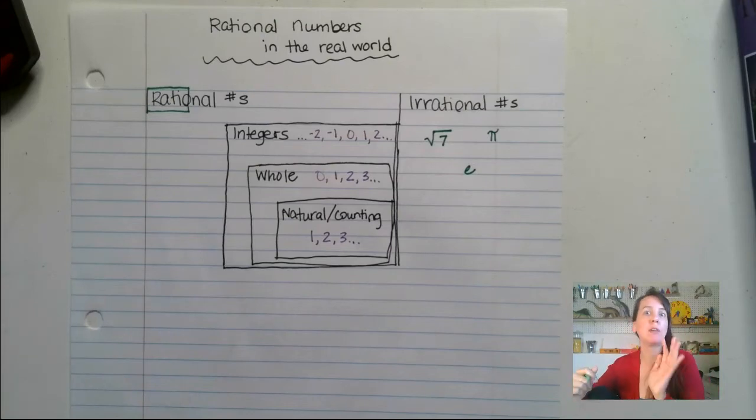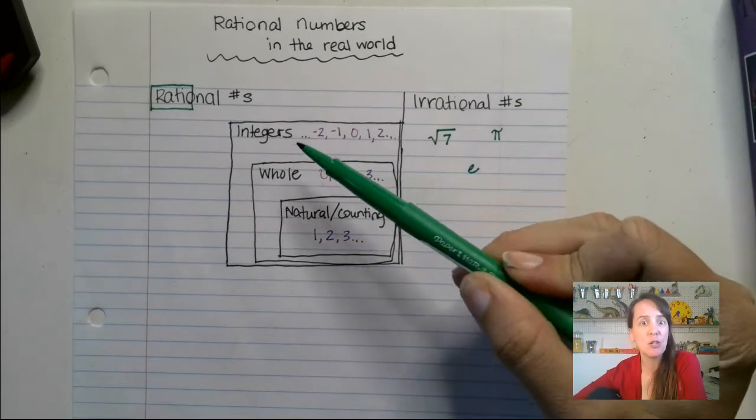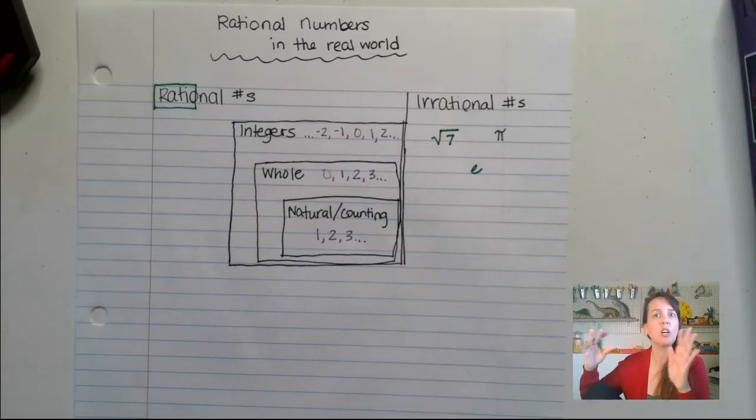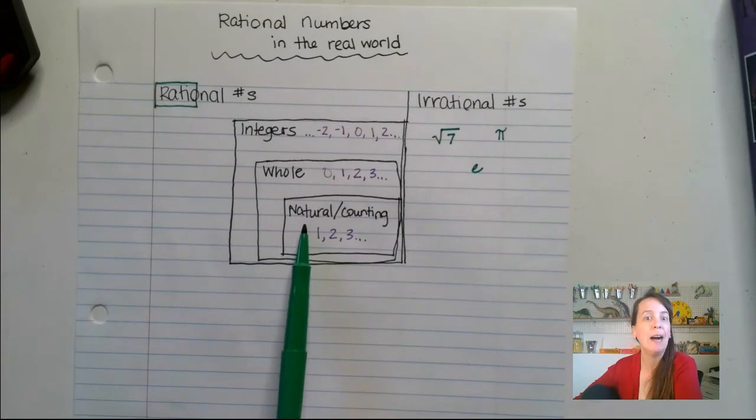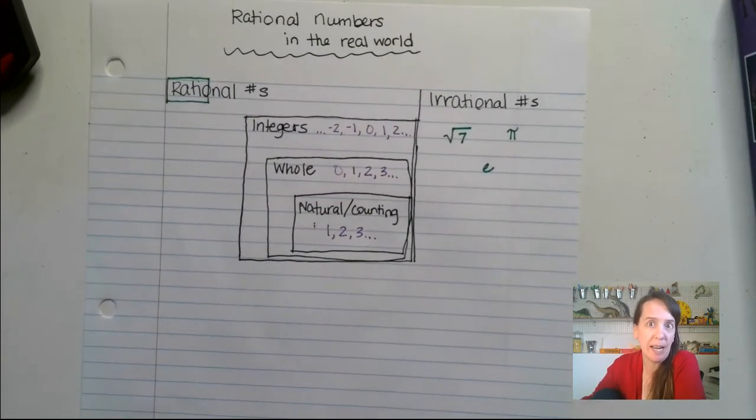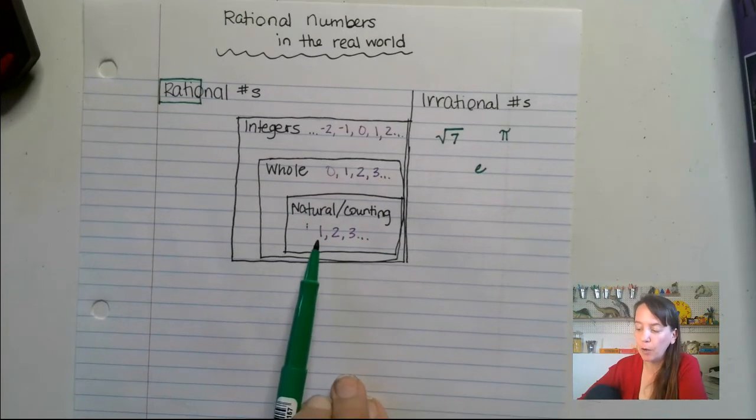So once you've determined if a number is rational, then what you have to do is determine is it an integer, whole number, or natural number. Let's work our way from the bottom up. Natural or counting numbers are things that we use to count. 1, 2, 3, 4, so on and so forth. So we go up with those guys.